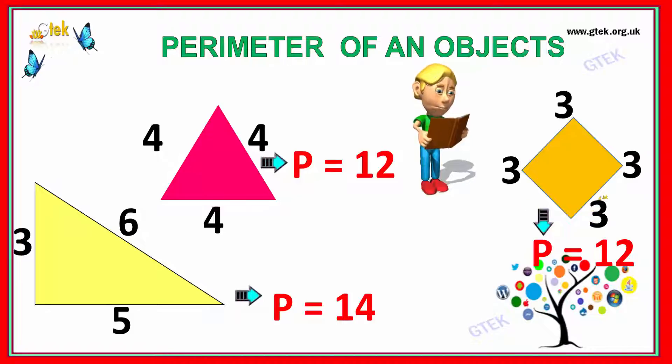Over here we've got a square with side lengths of 3, 3, 3, 3. So adding four 3's, you get the perimeter as 12.